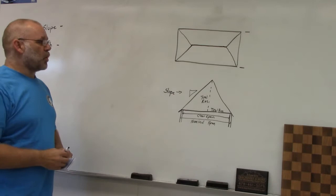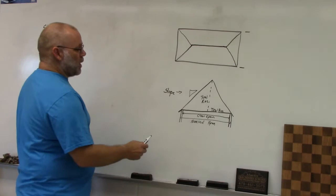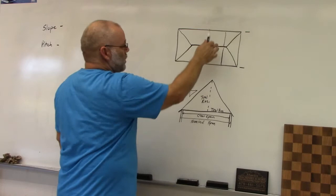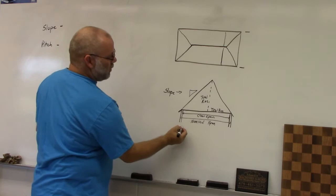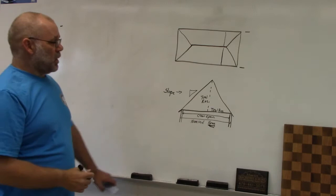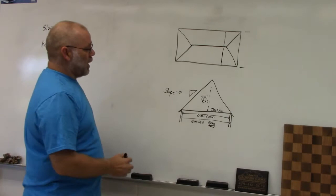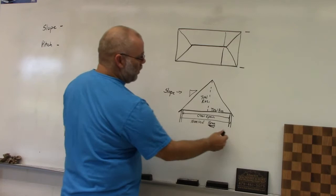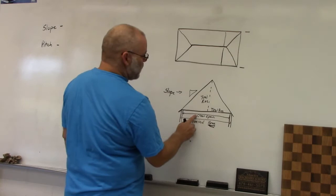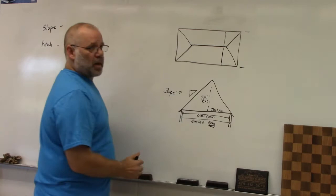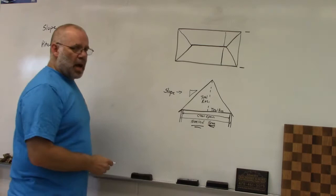Let's talk about terms we're going to use when figuring rafters. The distance rafters cover going up and over is called the span — that's what you use in the rafter tables to figure out rafter lengths. There are two spans: the nominal span, which goes from the outside of the wall to the outside of the wall, and the clear span, which goes from the inside to the inside. When using the rafter tables, you use the nominal span, not the clear span.